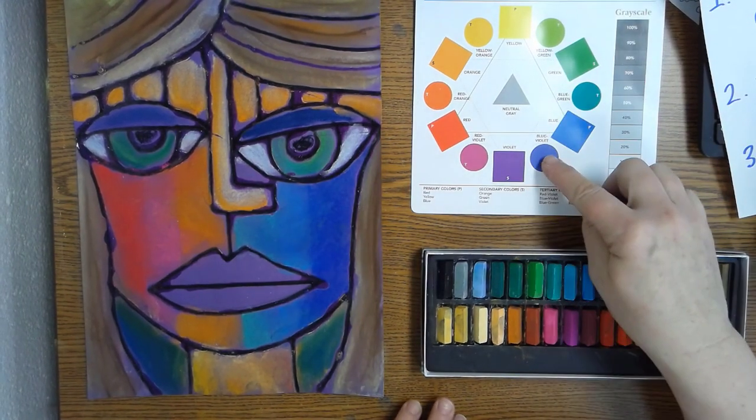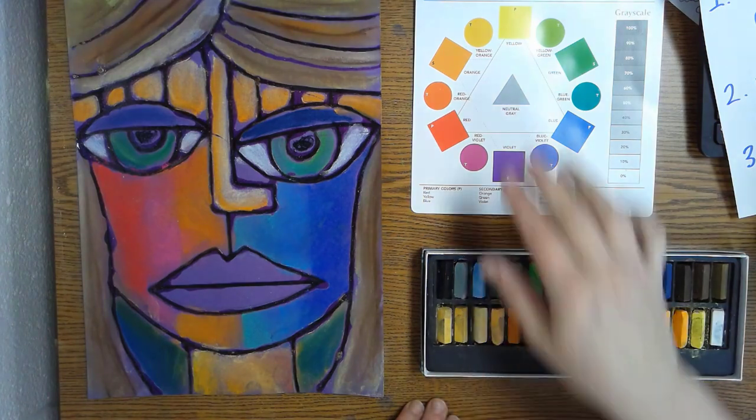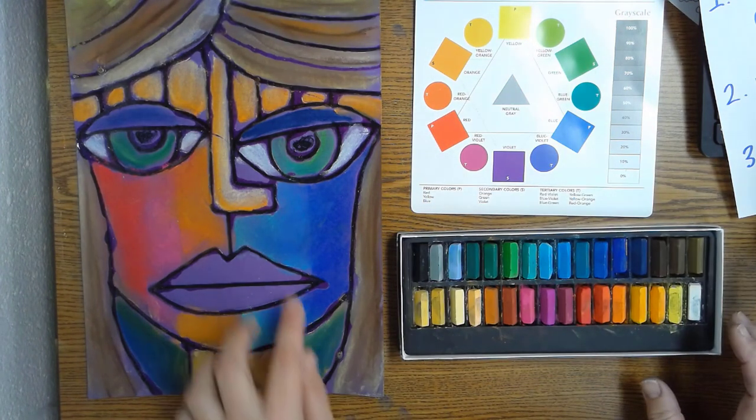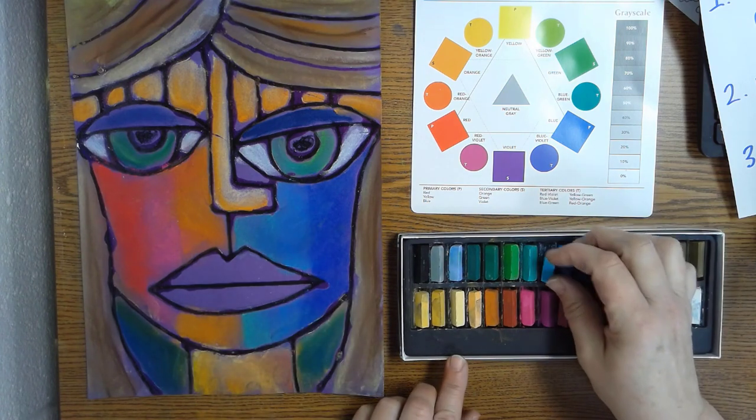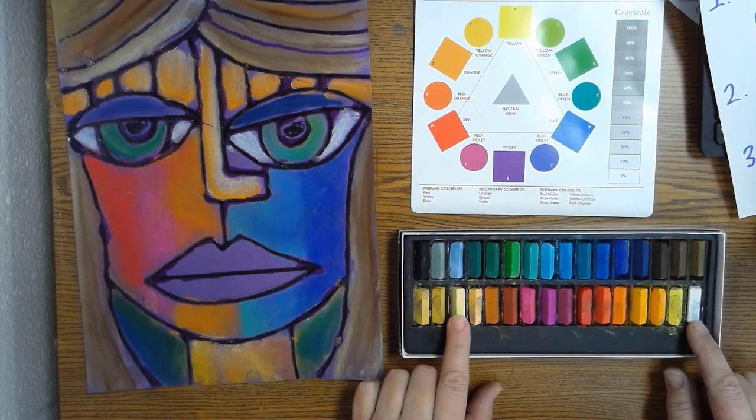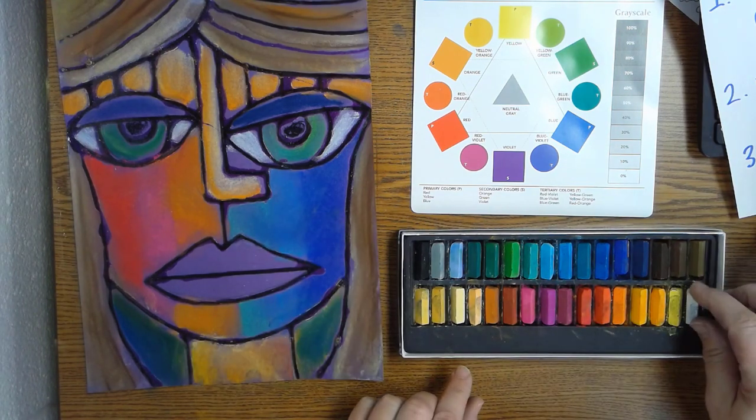So you'll want to, instead of doing colors that are next to each other, now I want you to pick colors that are across or a lot lighter. So if I'm doing it on the blues and I've got a dark blue here, I could use a light blue. I could use white, a cream color. So think of things that would contrast with the color you already have on there.